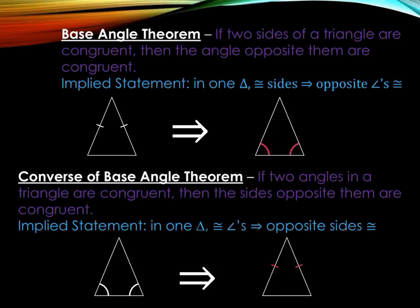Then we have the Converse of the Base Angle Theorem. Remember, the converse is to switch the hypothesis and conclusion. So this reads: if two angles in a triangle are congruent, then the sides opposite them are congruent. The implied statement: in one triangle, congruent angles implies opposite sides are congruent.